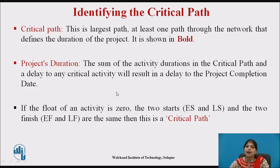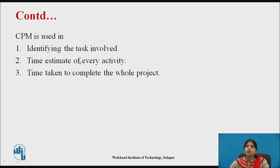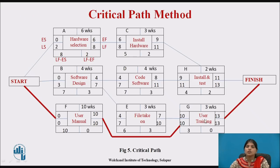To identify the critical path: if the float of an activity is 0 and the two start dates and two finish dates are the same, then it is a critical activity. CPM — the Critical Path Method — is used for identifying tasks involved, the time estimate of every activity, and the total time to complete the project.